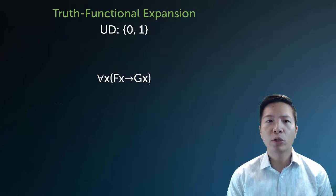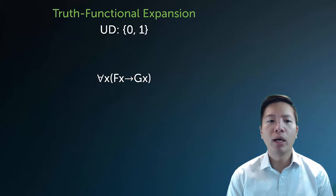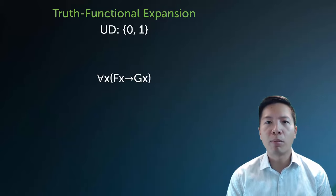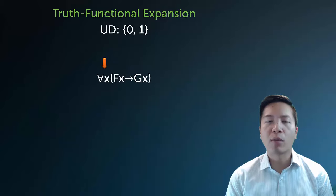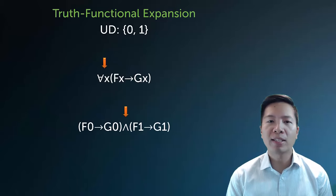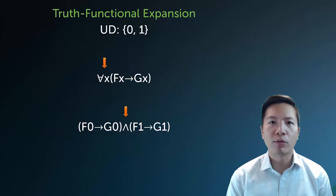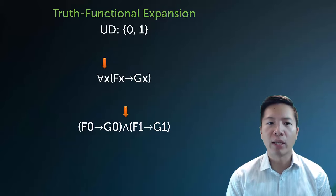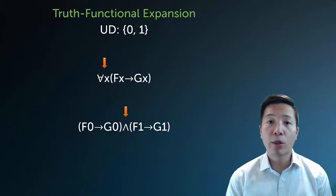So here's how we do it in practice. Let's do a truth functional expansion to a universe of two members, 0 and 1, of the statement 'for all X, FX arrow GX.' What does the statement mean in terms of the universalness of it, given that my universe of discourse only has two things in it, 0 and 1? Well, remember, what it actually means is it's going to be a string of conjunctions, because the main quantifier is the universal. So I end up expanding it to each individual member of my universe of discourse one at a time, and each time I join them with a conjunction. So I replace X with 0, then I say AND, and I replace X with 1. This makes perfect sense: if everything that's an F is a G, well then it must be the case that if 0 is an F it's a G, and if 1 is an F it's a G.